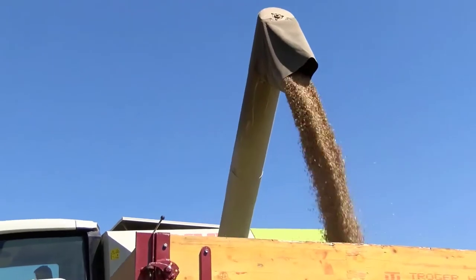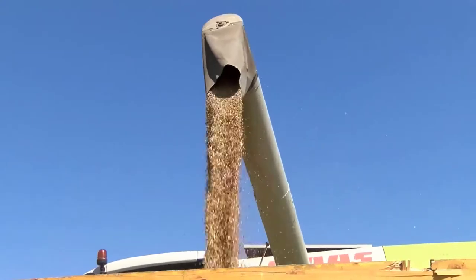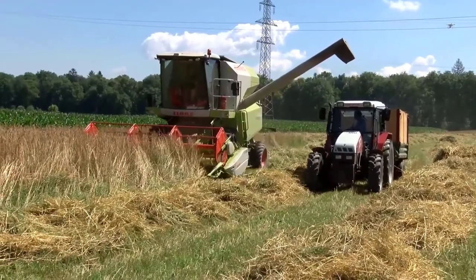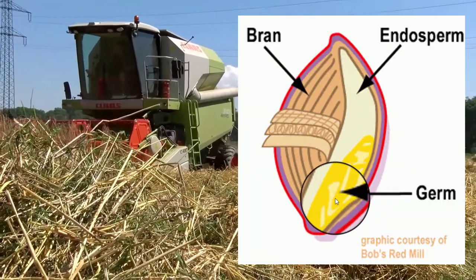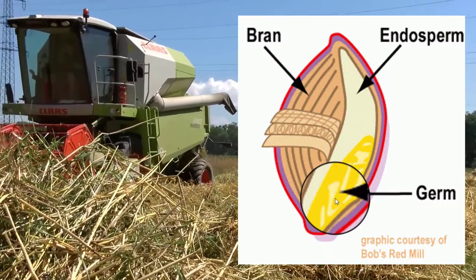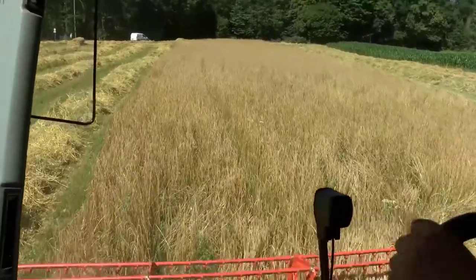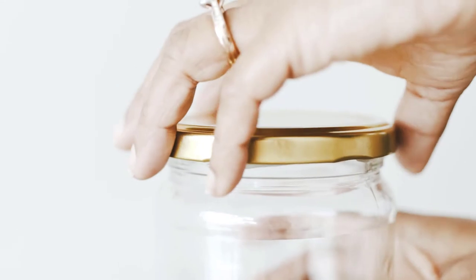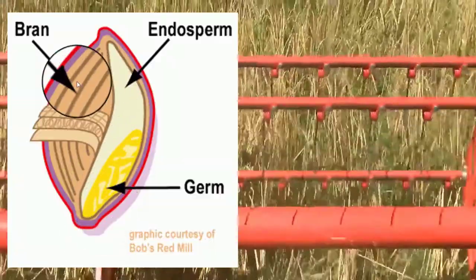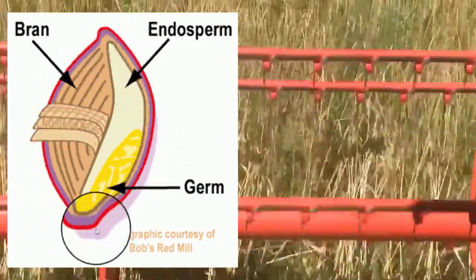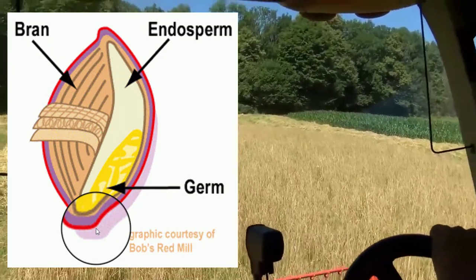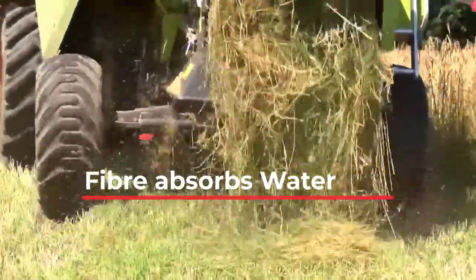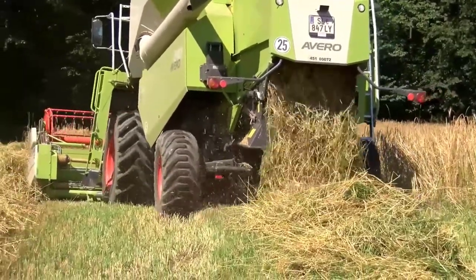The germ is where all the nutrients are packed, necessary for the grain to grow into a plant. Back when our food was getting industrialized, whole rice and whole breads were going bad really fast. One reason is that the germ has a lot of healthy fat in it. When fat is exposed to air and sunlight too long, it goes rancid — you get that bad smell, like when you open a box of nuts that have been sitting too long. The bran layer is filled with fiber, vitamins and minerals like magnesium and zinc. Fiber absorbs water, and when there's too much moisture, food starts molding and going bad.